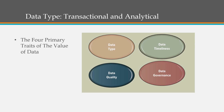The second trait is timeliness — it's about when we get the data, how often it's collected, and how often it's assimilated and ready and usable for our business analysts. Next is data quality: has the data been cleansed, formatted, and structured in a way that allows us to understand, read, and use it for analytics?